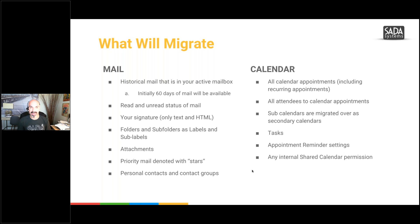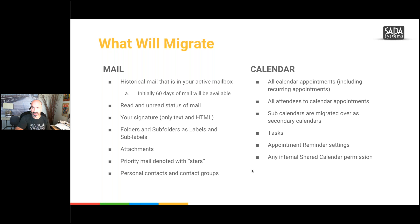Personal contacts and contact groups — we're going to talk more about them. Calendar appointments will migrate, along with attendees to those appointments. Secondary calendars will migrate over as well. Tasks, appointment reminders, settings will migrate over, and also internal shared calendar permissions — so if you have permissions with somebody else in Outlook with their calendar, those will migrate over in G Suite.